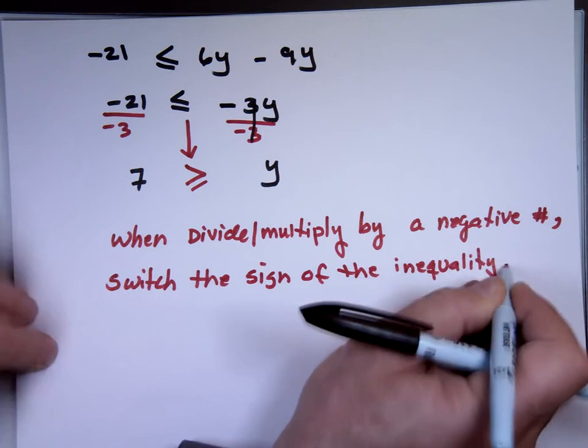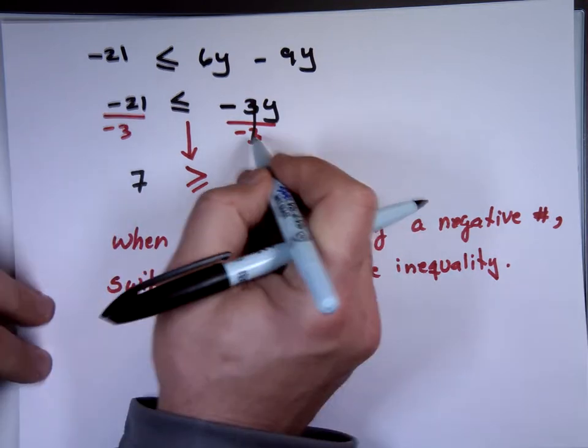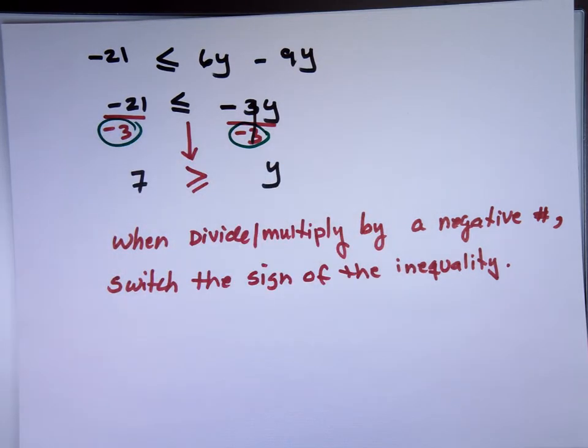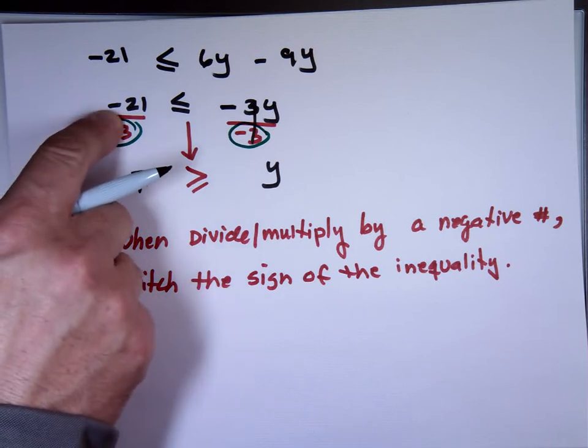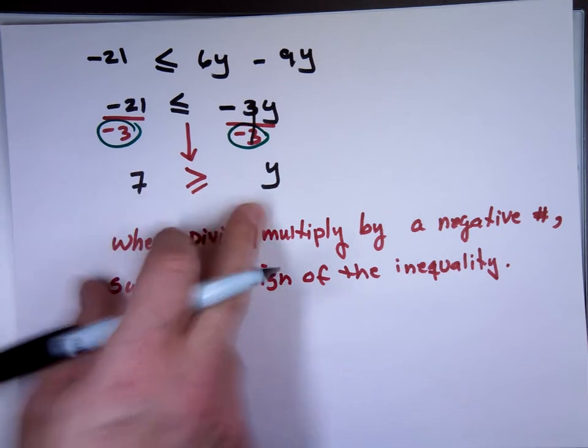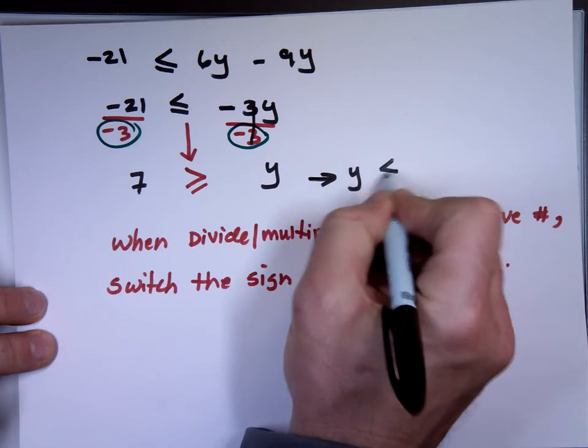What do you want to do? Switch the sign of the inequality. That's the only time we do something different to it. And now, the only reason I'm switching this has nothing to do with the negative 21. It has to do with, I'm dividing by negative 3. That's the reason why I'm switching the sign. I don't care if that number is positive or not. So, my answer, y is less than or equal to 7. That's what this one is saying. It just looks funny. It reads, y less than or equal to 7.